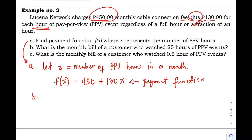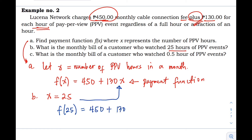For letter B: what is the monthly bill of a customer who watched 25 hours of pay-per-view events? The 25 hours is the value of x, so x equals 25. To find the amount to be paid, we input the value of x into our payment function: f(25) equals 450 plus 130 times 25. Simplifying: 450 plus 3250 gives a total of 3750 pesos.